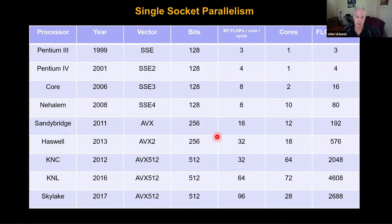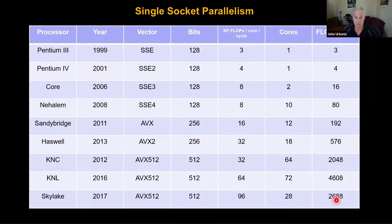This parallel stuff is so important today and built so deeply into processors that on a Skylake processor — and this isn't particularly leading edge — you get 2,700 math operations for every clock tick, because of various parallel techniques: how many cores you have, vector processing, and more. The important takeaway is that even on a desktop machine today, if you don't do parallel programming and have a serial code, you can't get even a tiny fraction of the performance of that laptop processor.